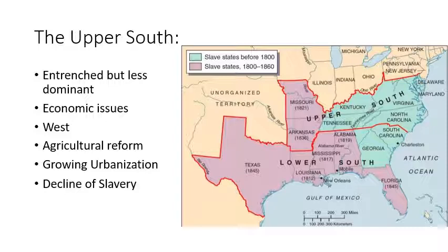You can see here that the Upper South includes states like Delaware, Maryland, Kentucky, Missouri, Virginia, North Carolina, Tennessee, and Arkansas.